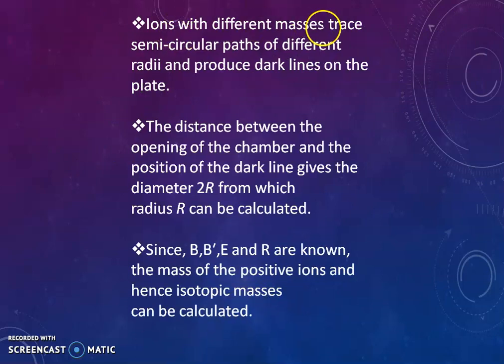The ions with different masses trace the semicircular path of different radii and produce the dark line on the plate. The distance between opening of the chamber and the position of the dark line gives the diameter 2R from which radius R can be calculated. Since we know the value of B, B dash, E and R are known, the mass of the positive ions and hence the isotopic mass can be calculated. This is how the Bainbridge mass spectrograph works.